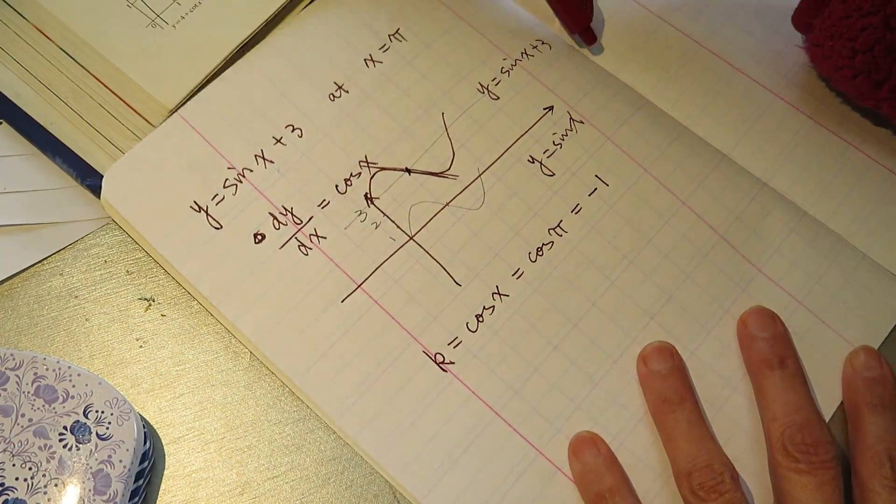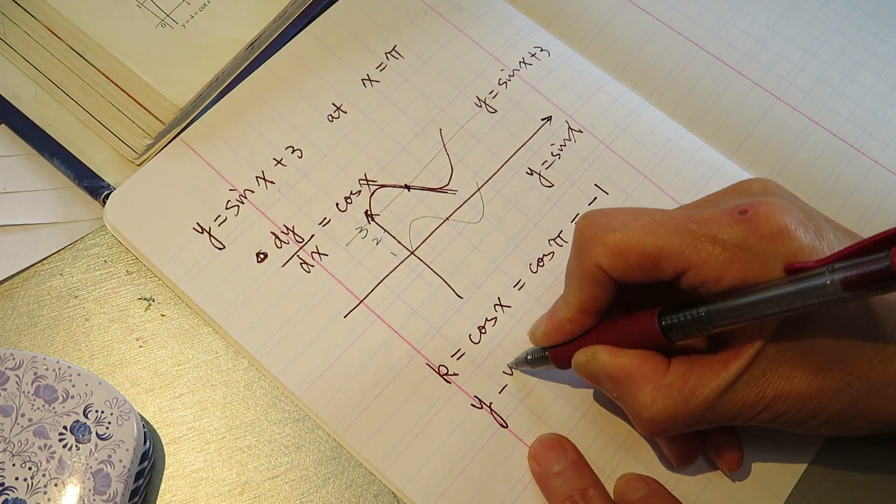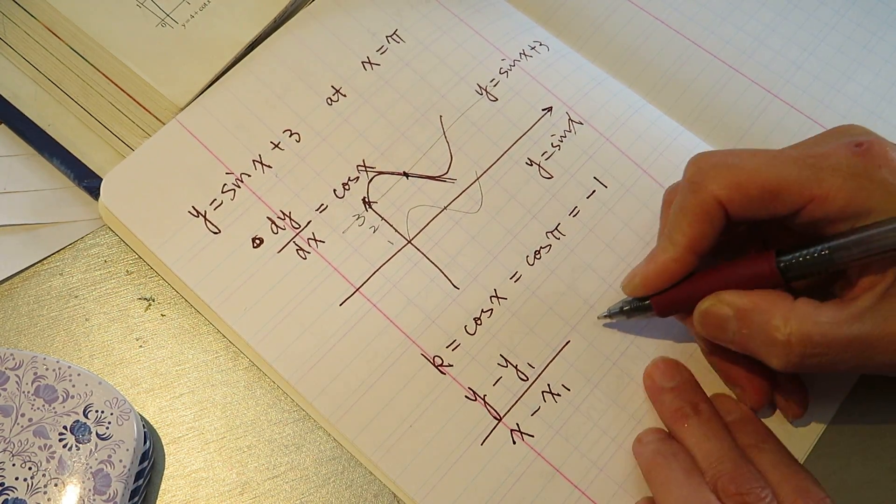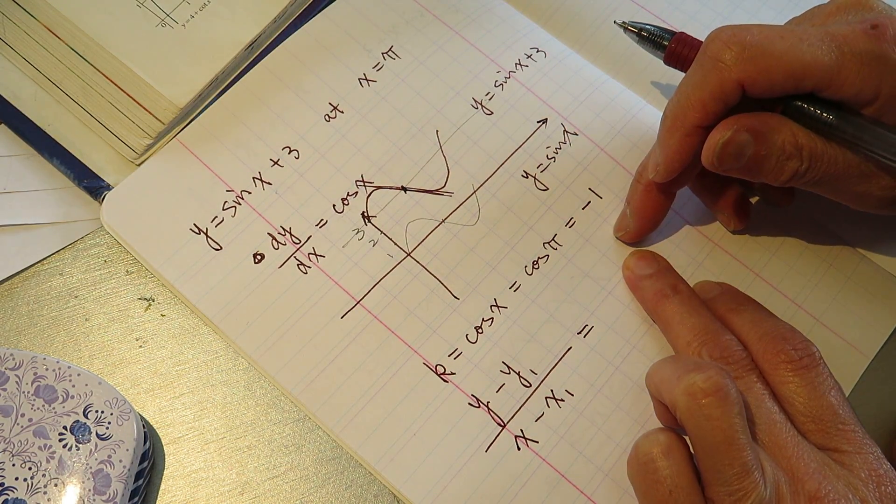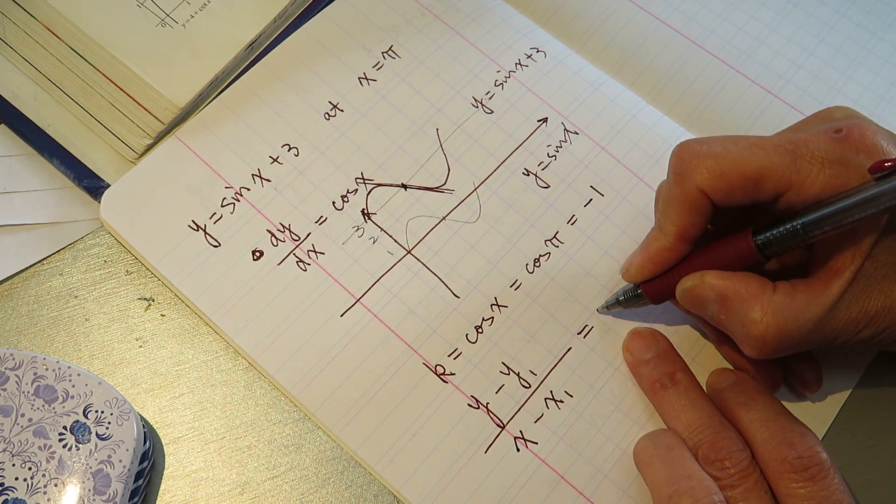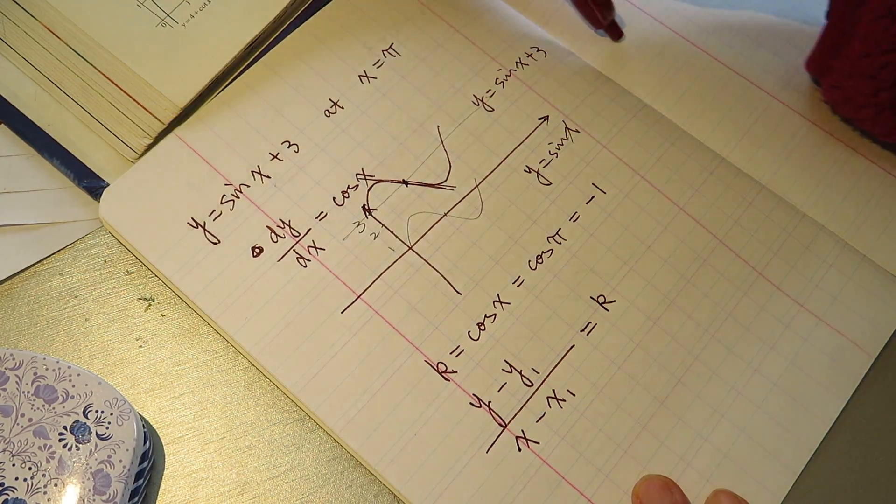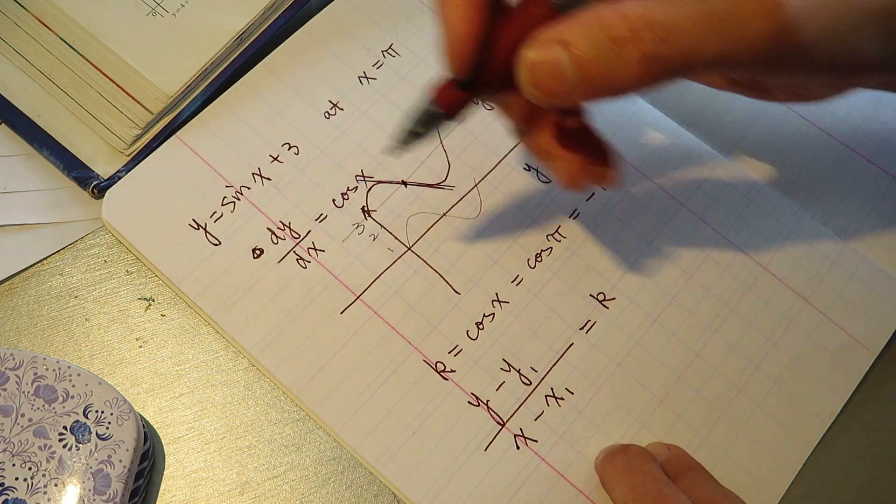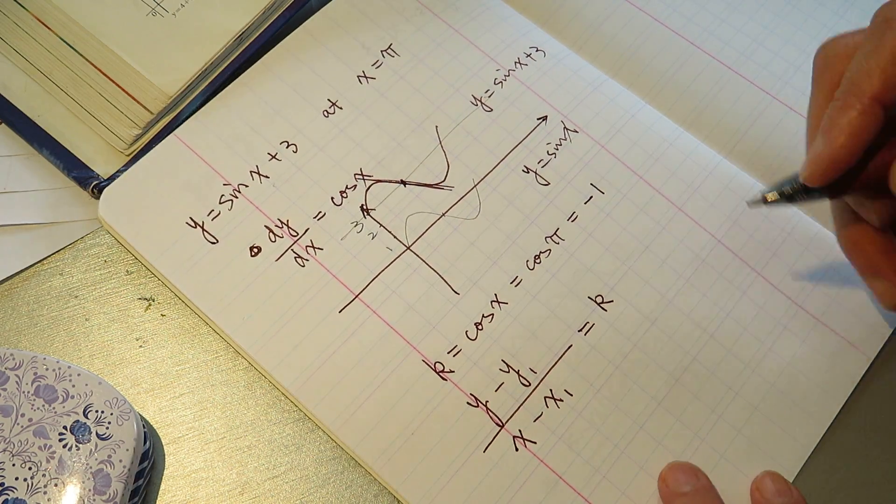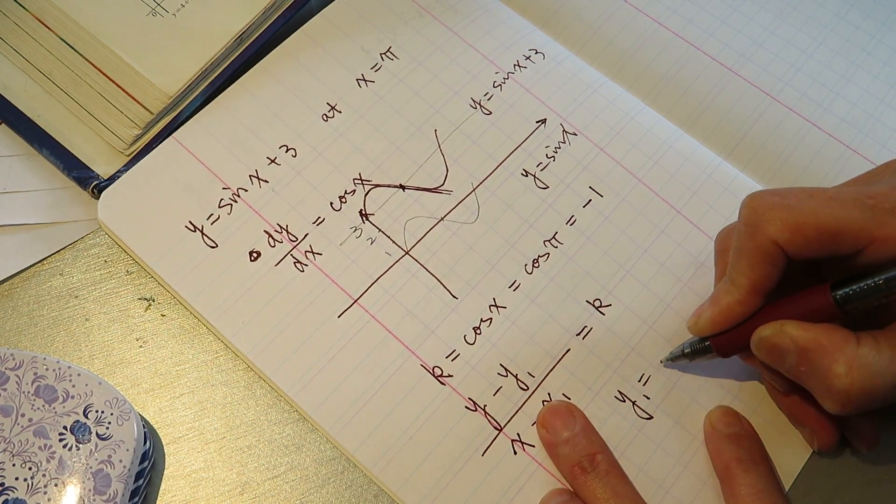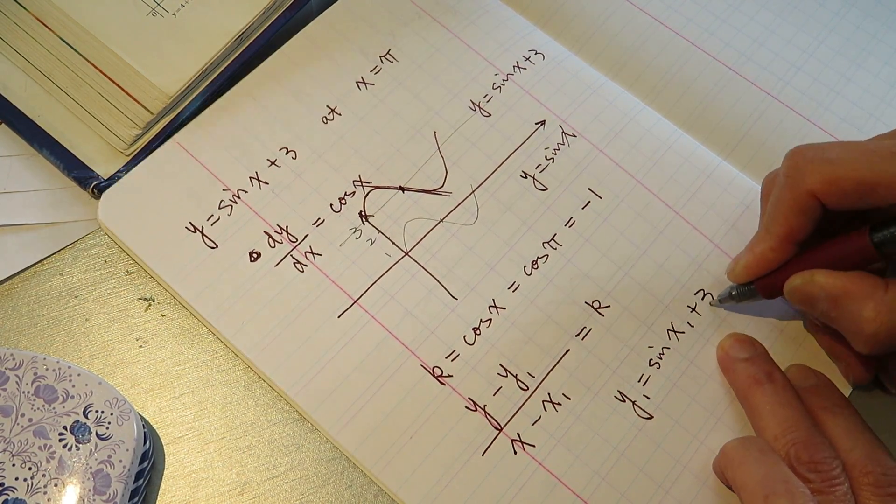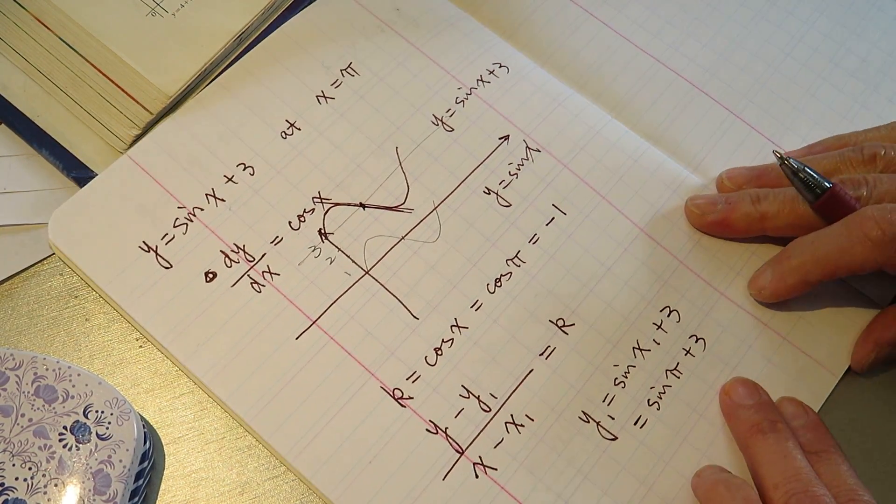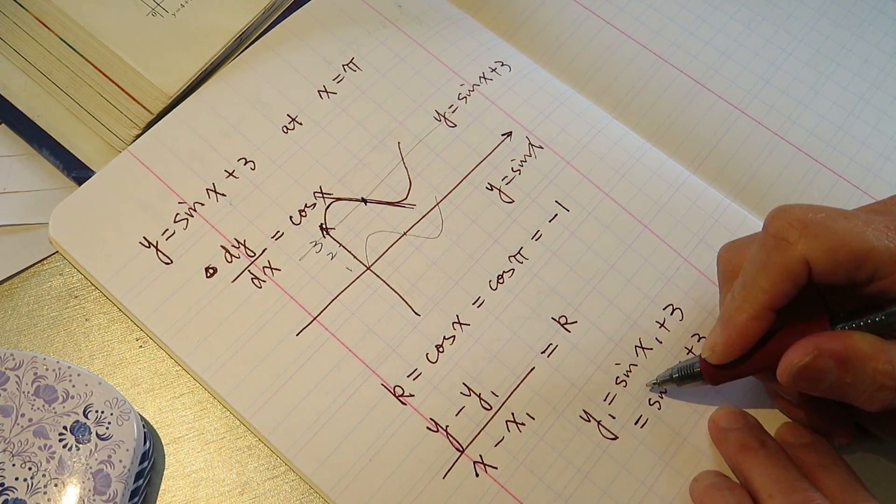So what does it mean? Derivative is y minus y1 divided by x minus x1 equal to this slope, to k, which is negative 1. So y1, we plug in this number into this function. x1, we plug in into this function also. Okay, y1 equals sine x1 plus 3. What is x1 equals sine pi plus 3. Sine pi plus 3, sine pi equal to, are we seeing it? Sorry.